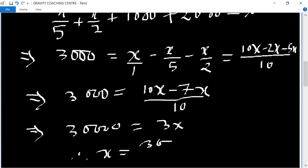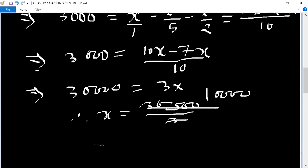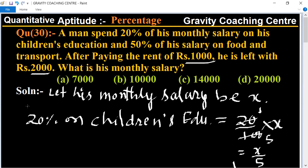Therefore X equal to 30,000 upon 3. Table of 3 cancel, 10,000, which is the required answer. So option B is the right answer.